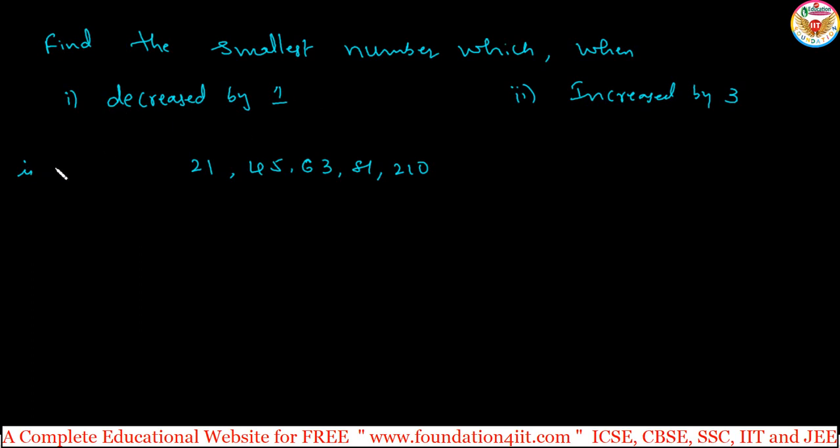It is exactly divisible by the numbers like 21, 45, 63, 81 and 210. So smallest number when decreased by 1 and increased by 3. First you have to find out the LCM for these numbers.